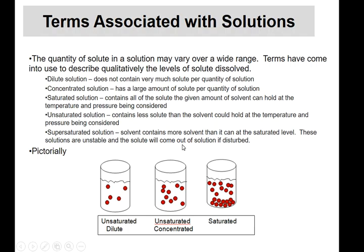Now let's look at some other terms associated with solutions. The amount of solute can change over quite a wide range. Imagine this experiment: you have a cup of water and you start putting salt into it. When you first start, you have just a little bit of salt — that's called a dilute solution. It means there's not very much solute per quantity of solution. A dilute solution is also called unsaturated.